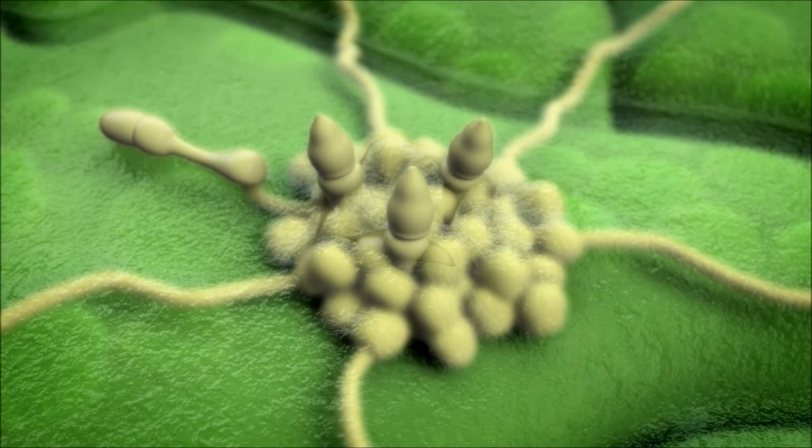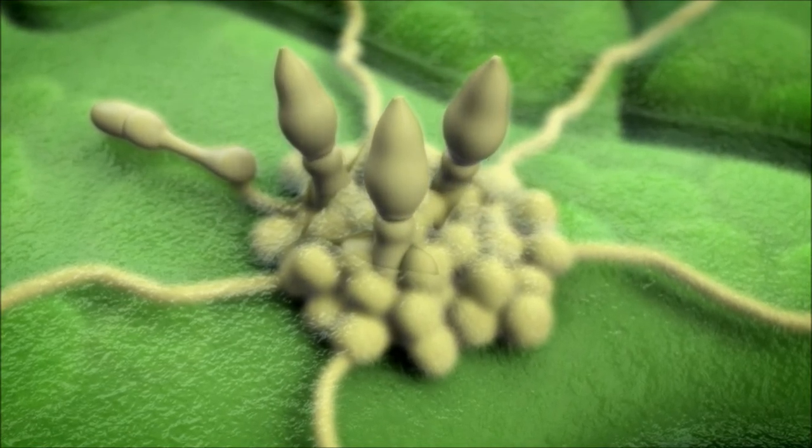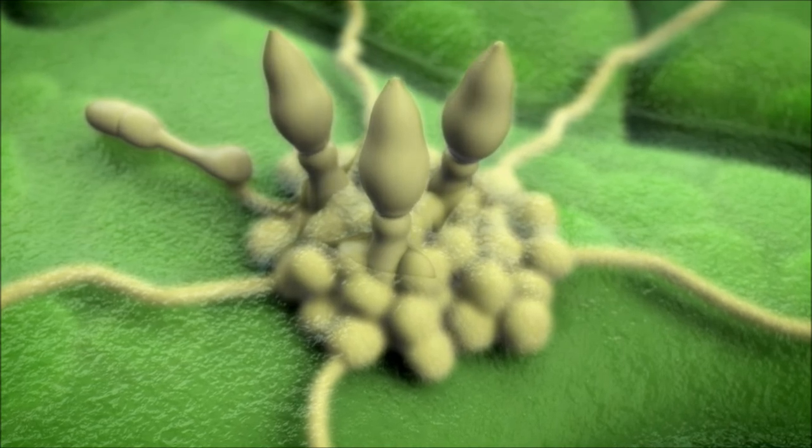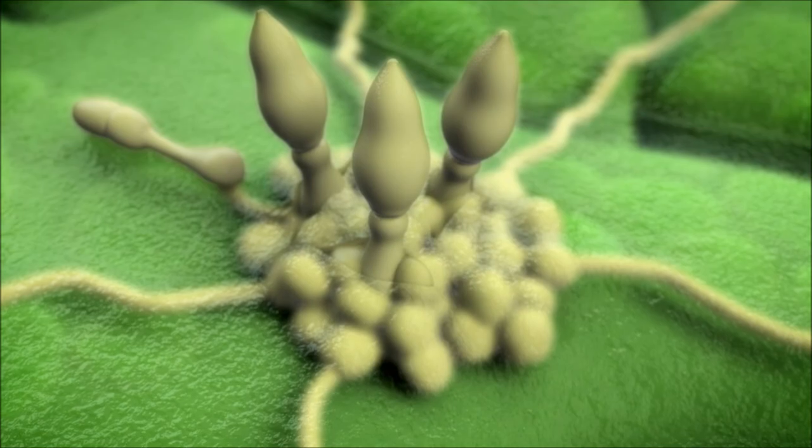Conidia pores develop, penetrating the cuticle to reach the leaf surface. At their tips, conidia break off, the spores of the asexual secondary fruiting bodies of Venturia inaequalis.